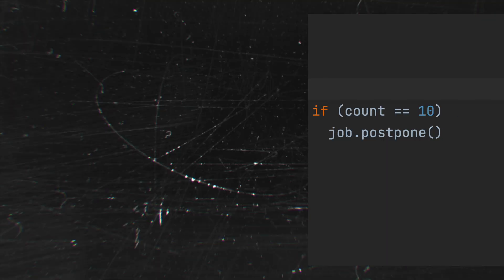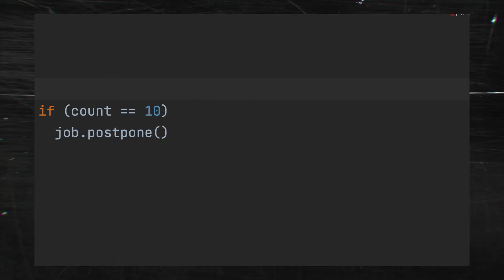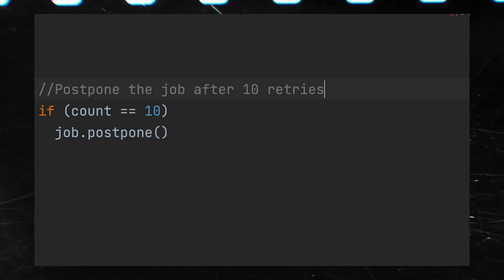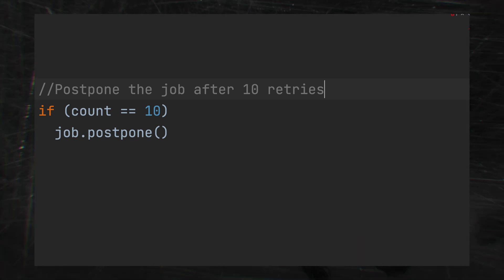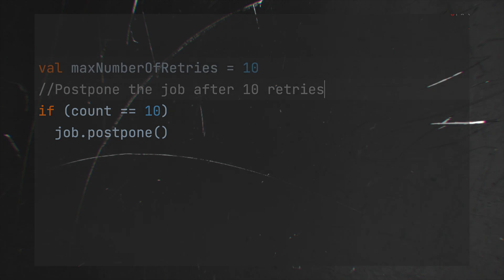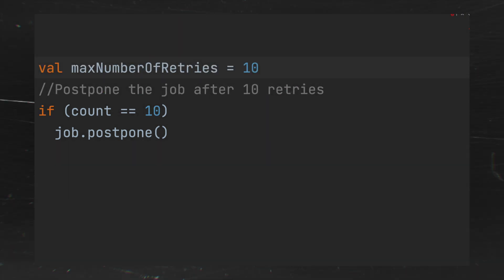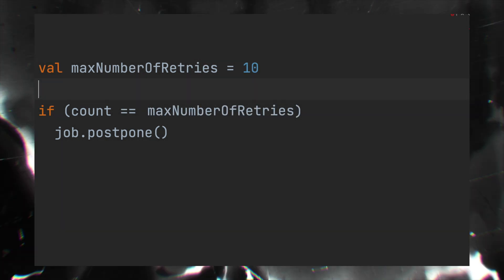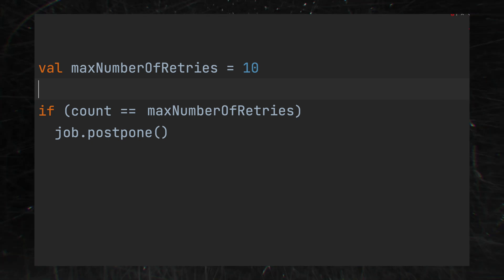Let me show you a code example. I write in Scala, but I guess it won't be a problem for you to read this code. Let's say there is code that postpones a job after a counter reaches 10. It's not really clear what 10 is, so let's add a comment: 'postpone the job after 10 retries.' Now it looks much clearer. Or we can make it better and introduce a constant that gives context — so the code reads more like a sentence in English, and there's no need for a comment anymore.